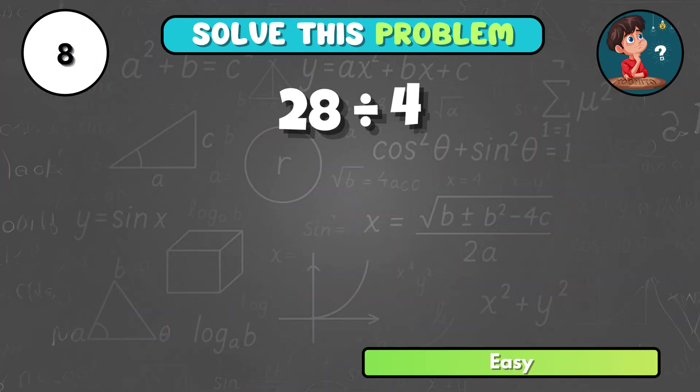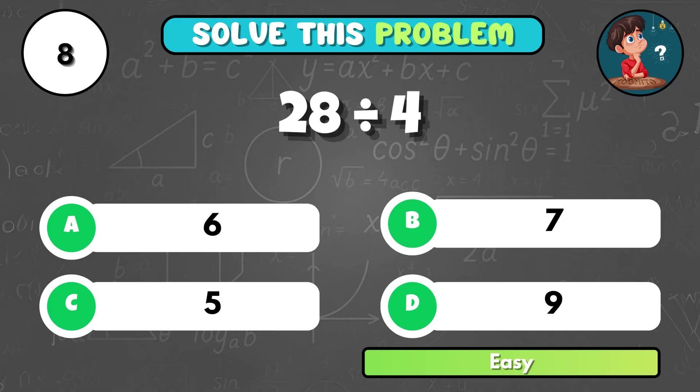Can you calculate 28 divided by 4? That comes to B, 7.